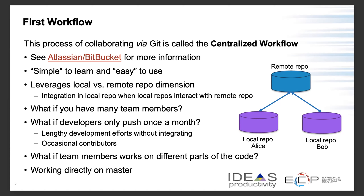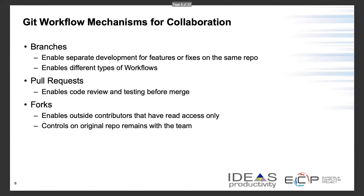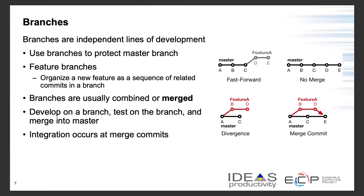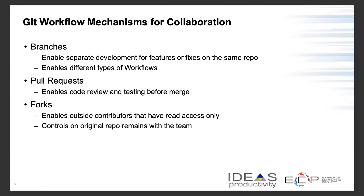Instead of everybody working on one master repo, wouldn't it be nice if there was another copy of the central repo? That's where the concepts of branches, pull requests, and forks come in. All of these Git workflow mechanisms can help us develop code more efficiently. Centralized workflow alone does not work well, so branches, PRs, and forks are three different workflow mechanisms that help.